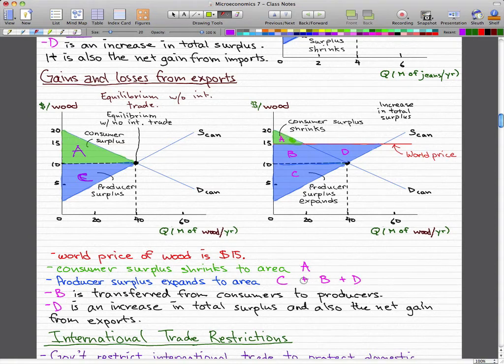And D is actually an increase in total surplus and again, it is also the net gains from exports instead of imports.